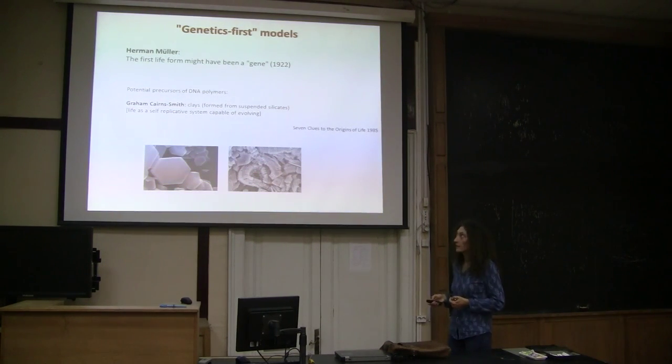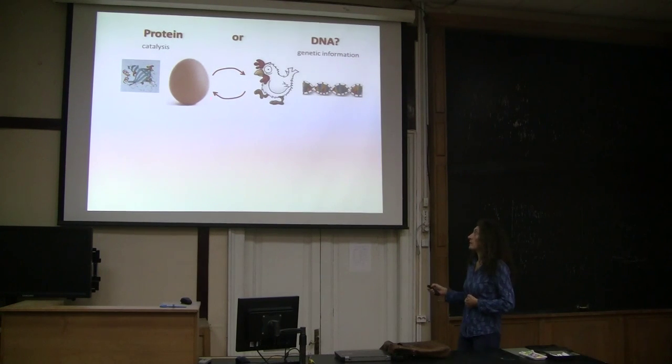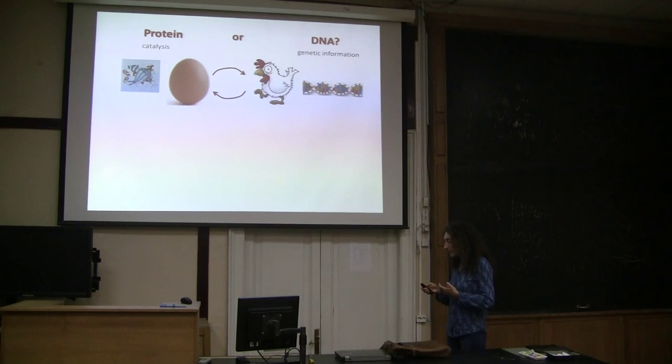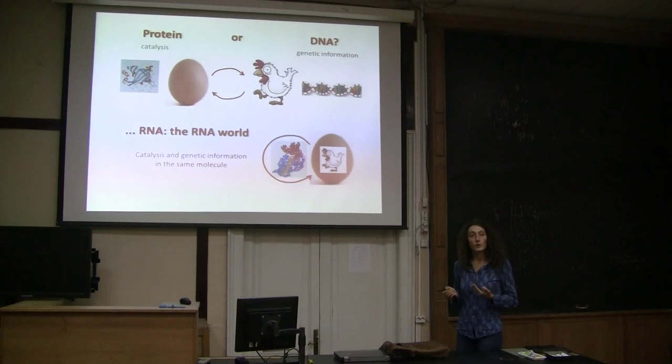So these are some of the models that were there at the time. But for a long time, there was this dichotomy between metabolism-first models, so between actually the idea of catalysis, function, metabolism, and genetic information. There was a fight, or dichotomy, and dialectics between proteins and DNA. And this, at the given moment, was substituted by RNA. Because, and this occurred when ribozymes were discovered.